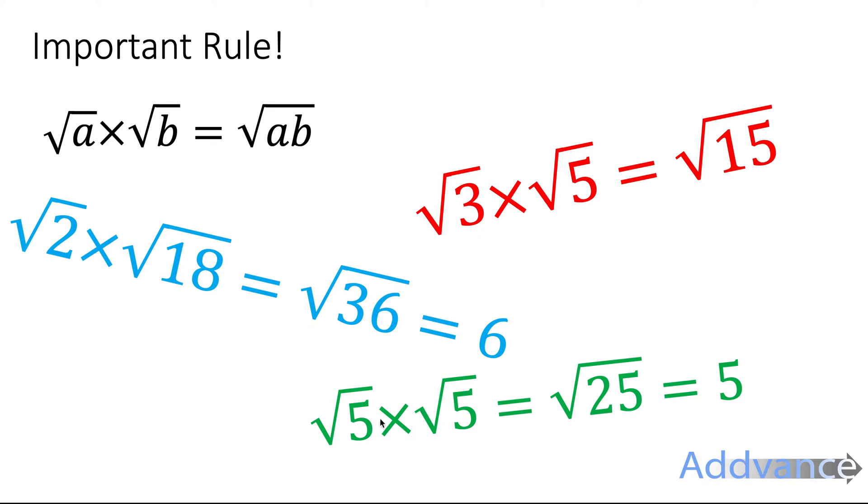And similarly, the square root of 5 times the square root of 5 is the square root of 25, which is just 5. And so whenever you've got a square root of 5 times the square root of 5, that will just be 5 itself. And if you think about it, that makes sense, if you remember that square rooting is just the opposite of squaring.